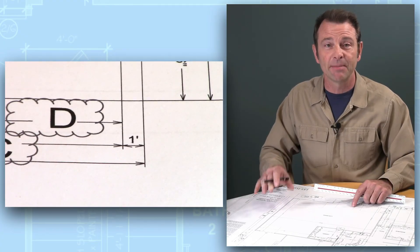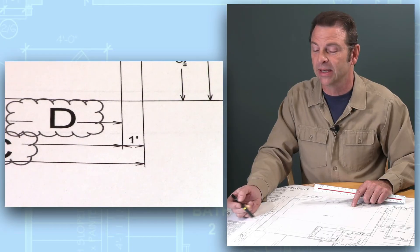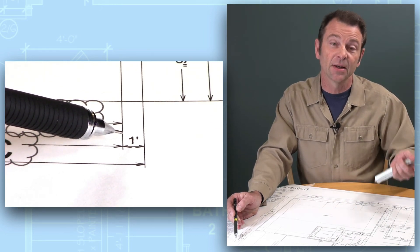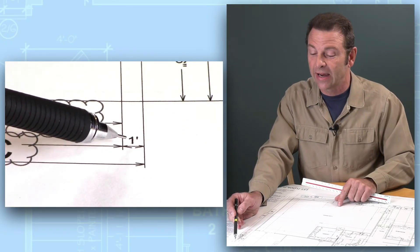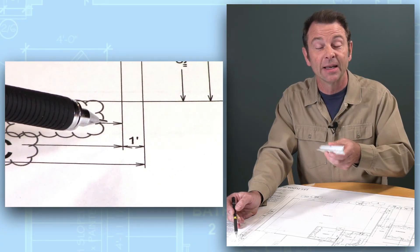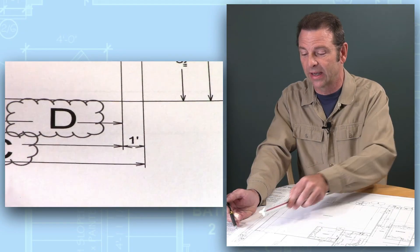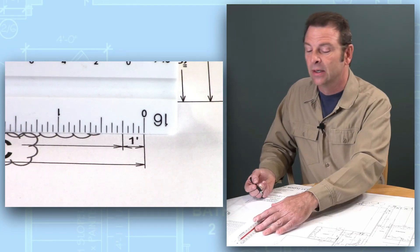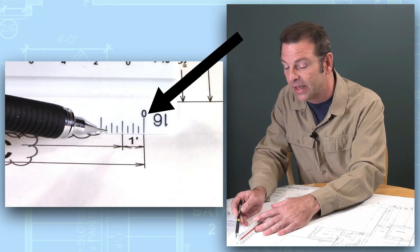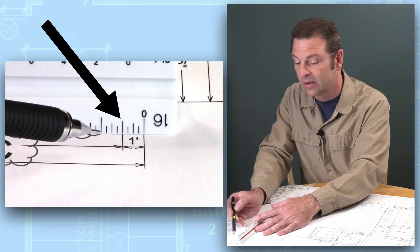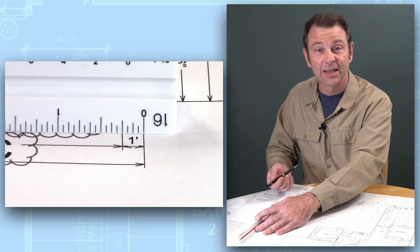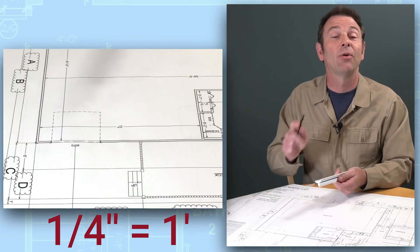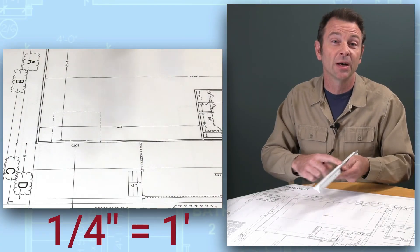We need to find a simple dimension on the plans that we can reference. On this set of plans I have a dimension that is one foot — and all of our scales reference a certain fraction of inches equals a foot. So I measure that one-foot dimension with my ruler. I place the ruler on the dimension line very carefully, with zero on one edge. My quarter-inch mark lands on the other edge of that one-foot dimension. That tells me very simply that the scale of this drawing is one quarter inch equals one foot.